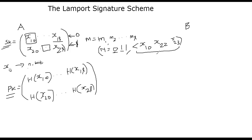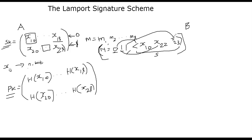She's sending the message and the signature to Bob as a pair. To map each message bit to the corresponding signature element: zero corresponds to the first-row entry, one corresponds to the second-row entry. So that's basically what Alice sends. She sends M together with the selected sequence of private key values — that is her signature for message M.